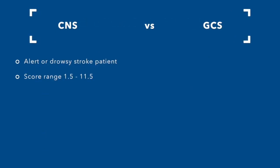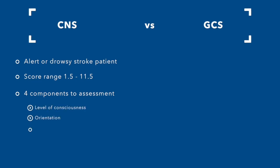The CNS score range is 1.5 to 11.5. There are four components to the assessment: level of consciousness, orientation, speech — both expressive and receptive — and motor strength.